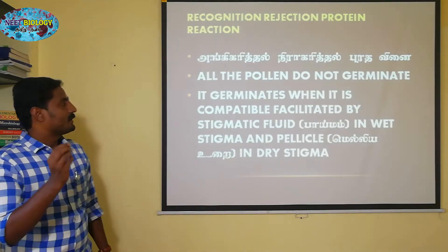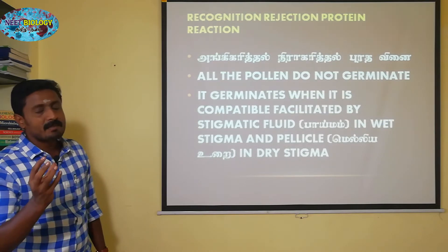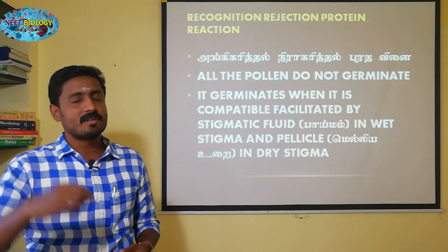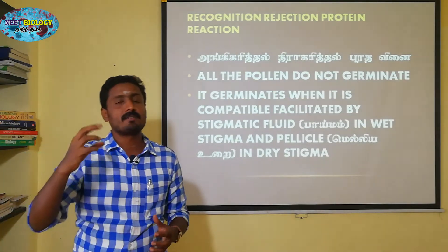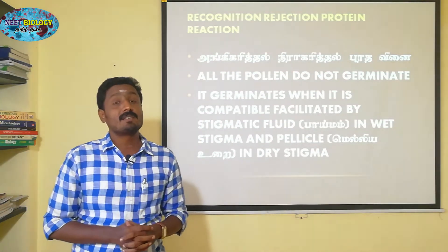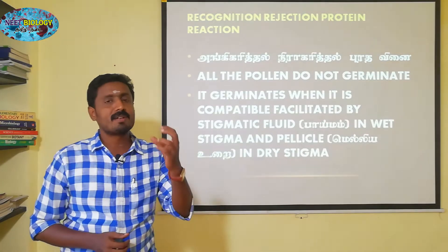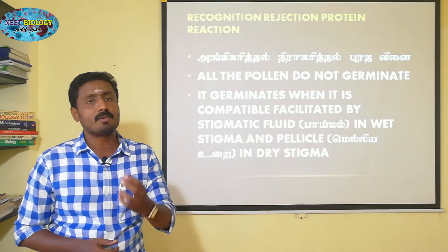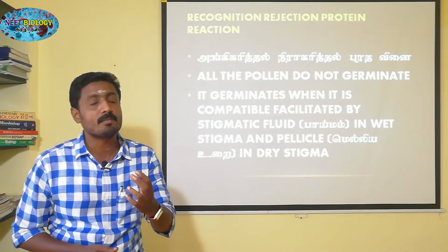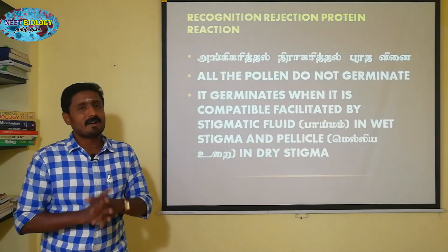If it is a wet stigma, fluid is secreted and induced. Pollen grains are induced, producing the pollen tube. Pollen grains germinate into a pollen tube when fluid is produced by the stigma.